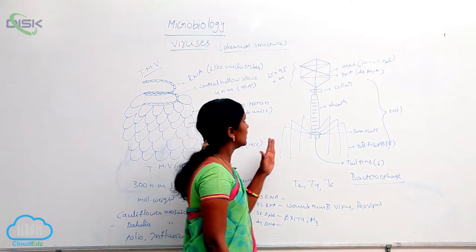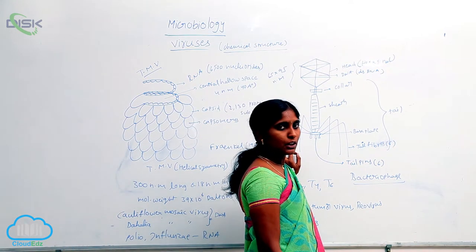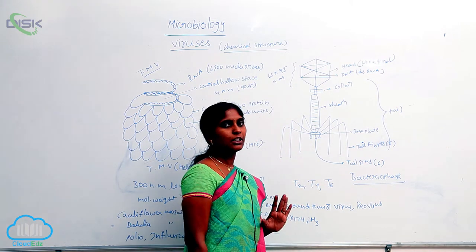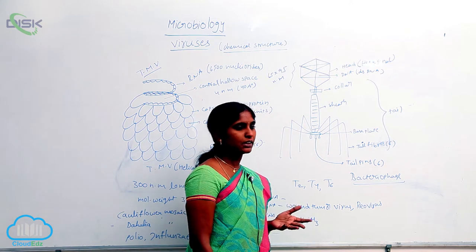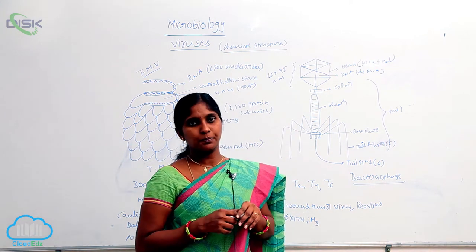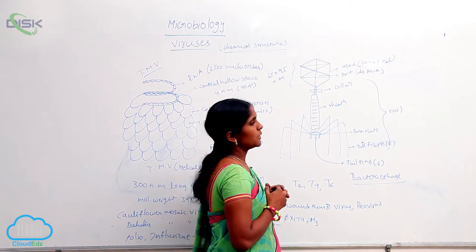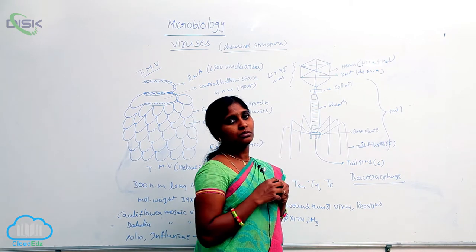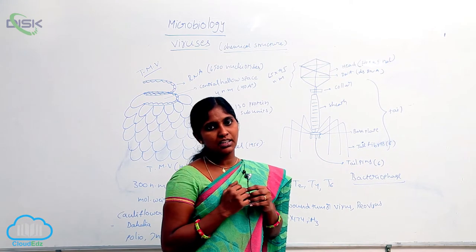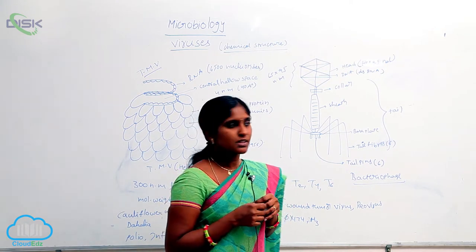Then, you come to the bacteriophage. Bacteriophages are viruses which live on bacteria, which infect the bacteria. Here the structure is tadpole shape. Tadpole shape of the structure. It has tail and head. The head is hexagonal shaped. The long tail is present.